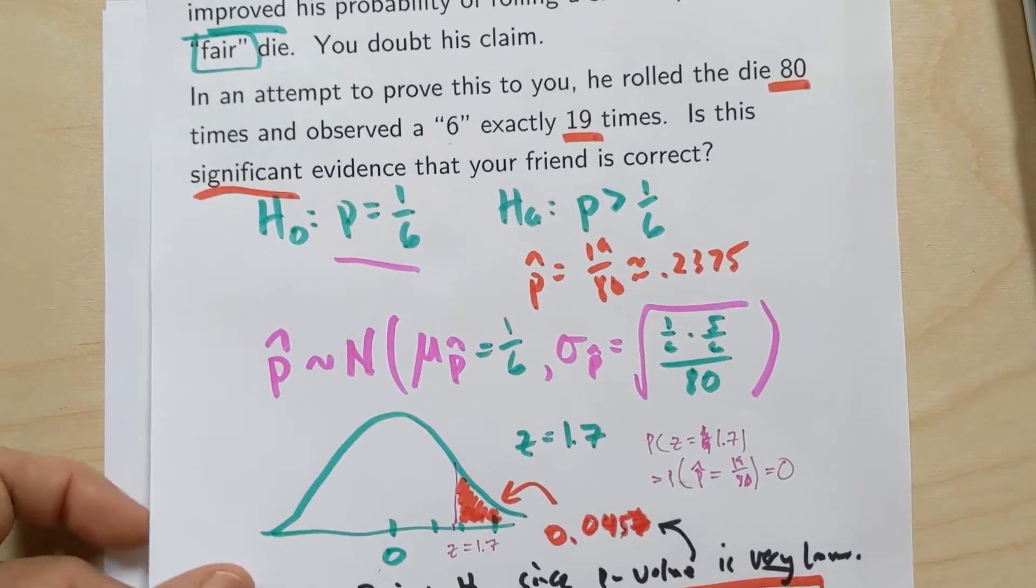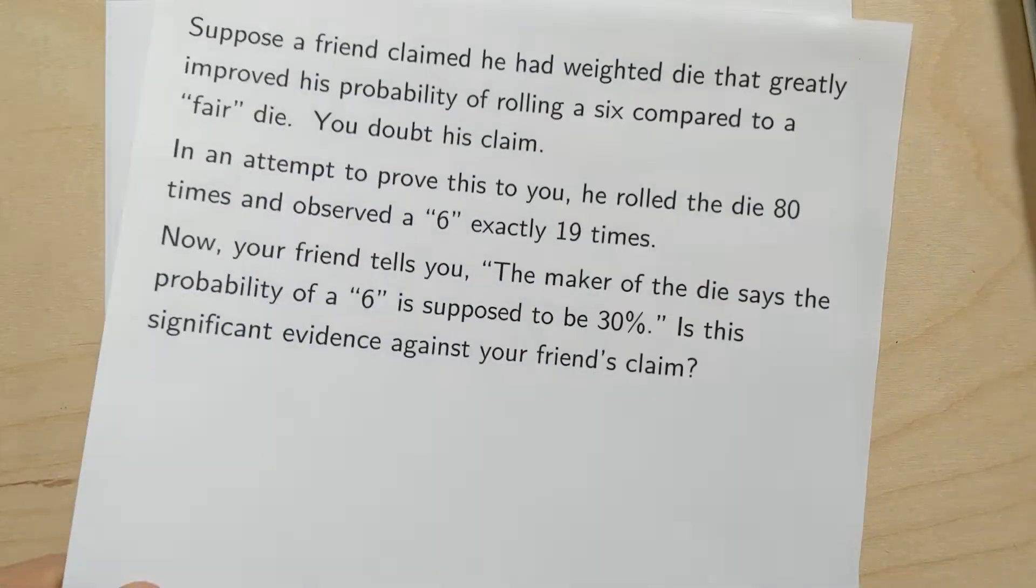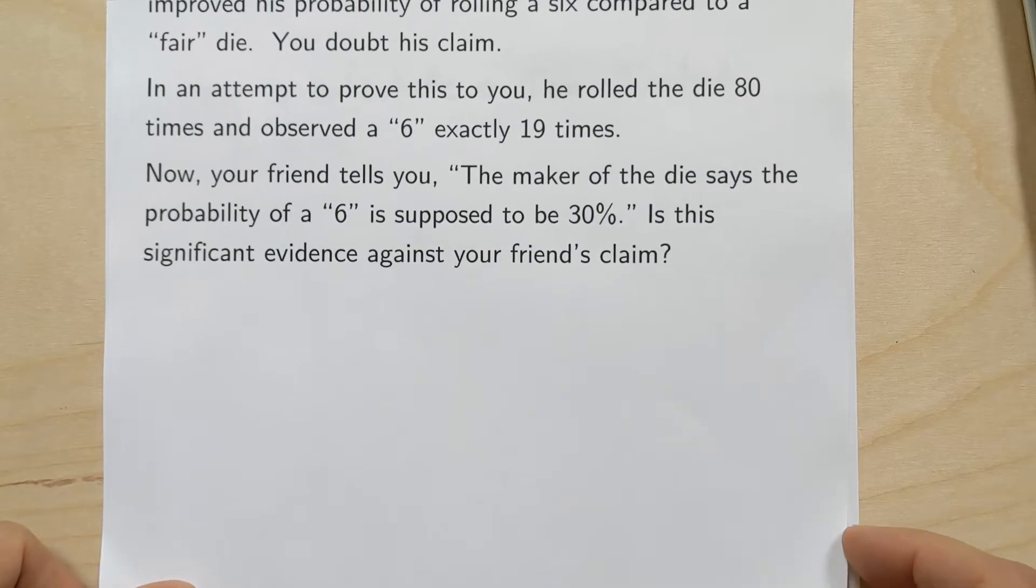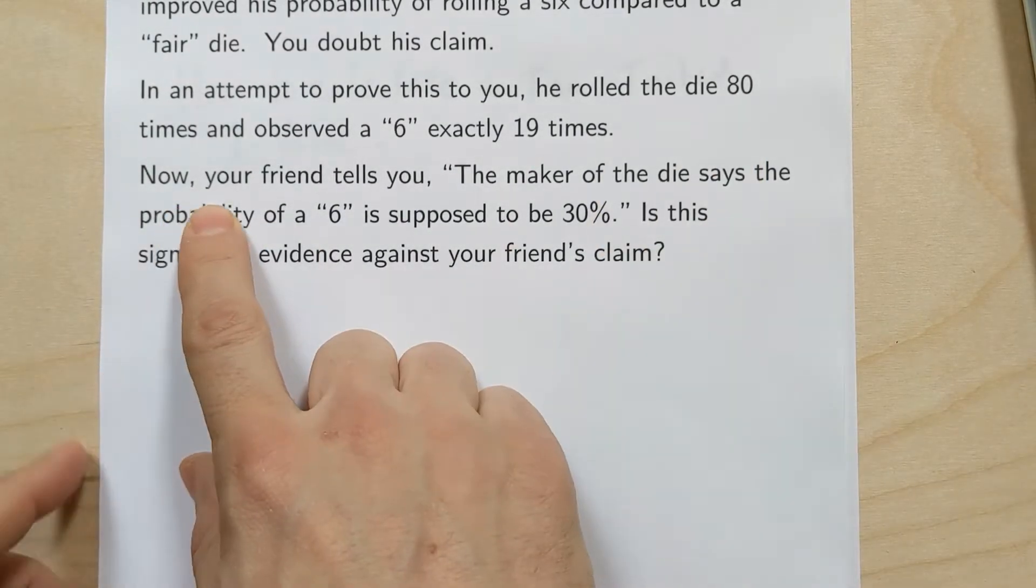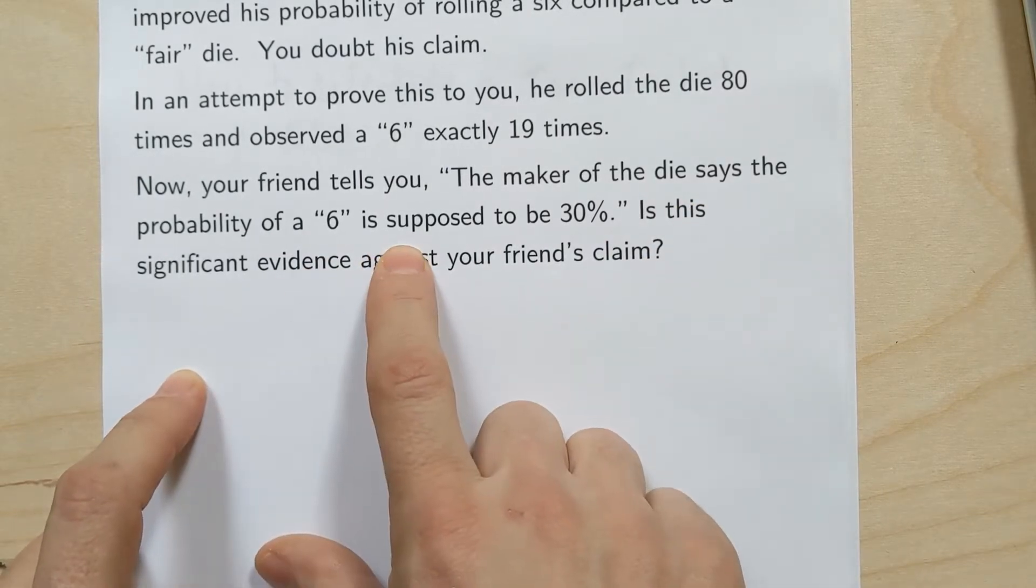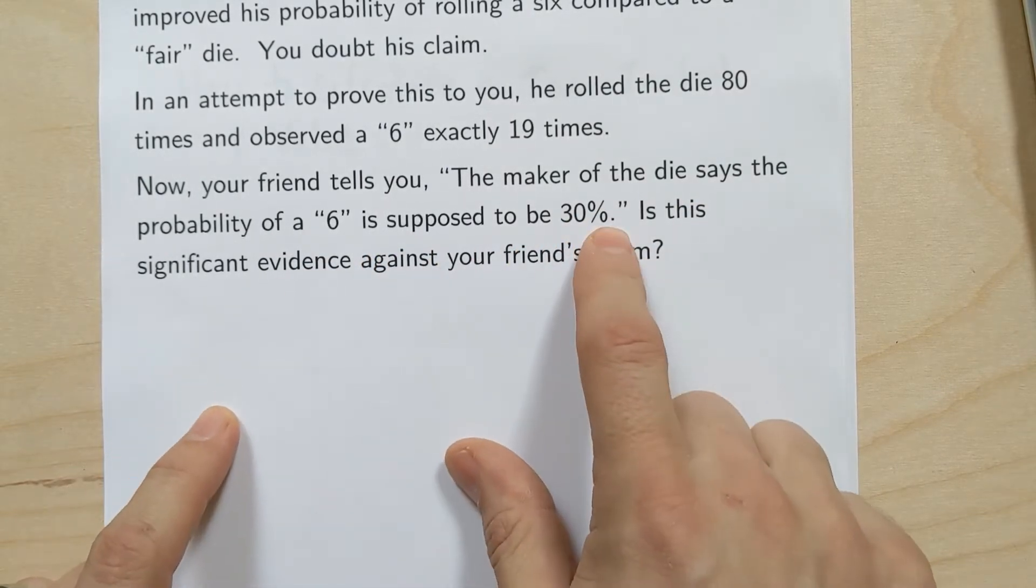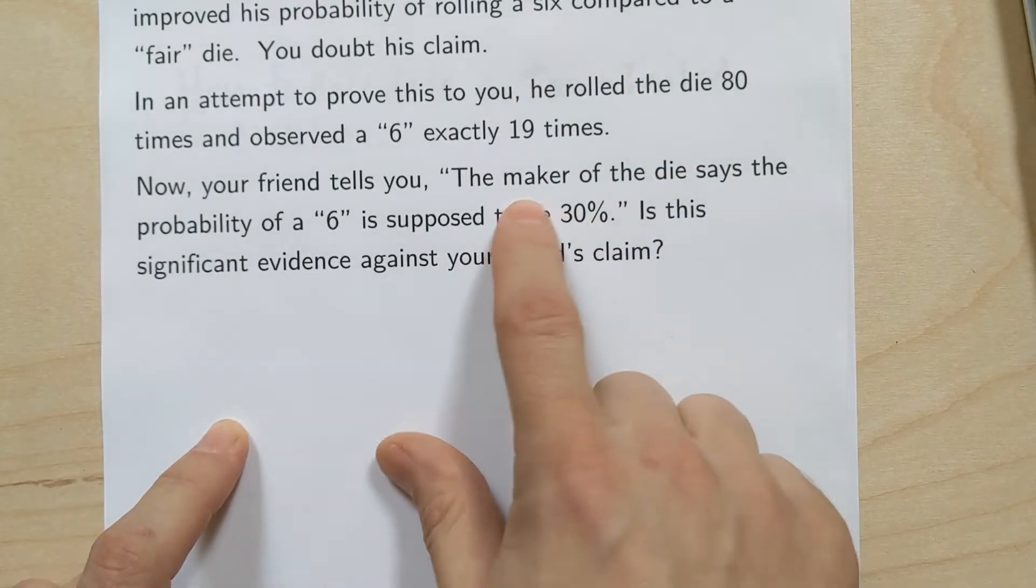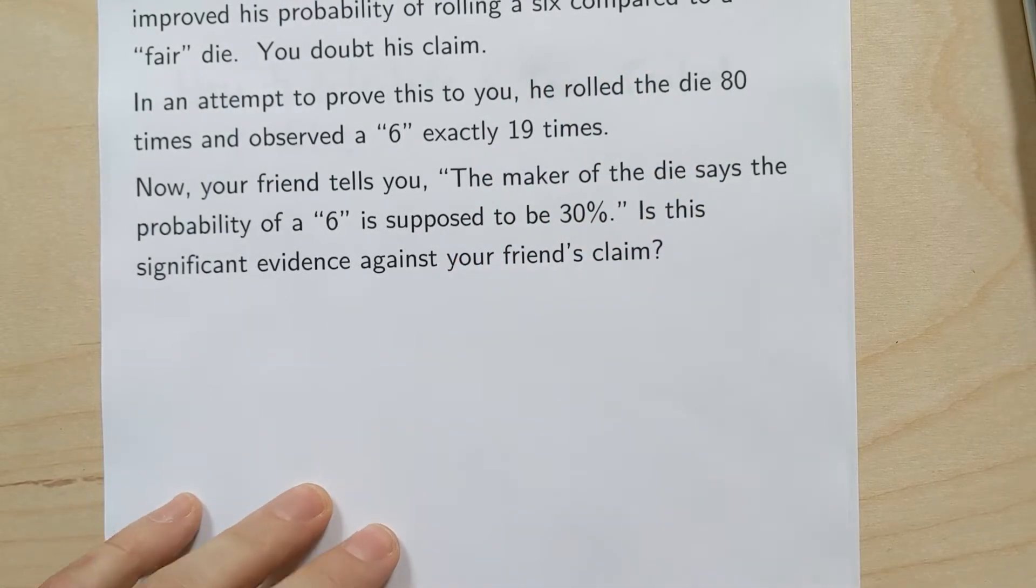So now we're in a new world. We're going to assume that this really is an unfair die. And so now our friend continued. He said after he rolled all these dice, he adds this extra fact. He says, the maker of the die says the probability of a six is supposed to be 30%. Now let's go back. In these 80 rolls, is this significant evidence against our friend's claim?